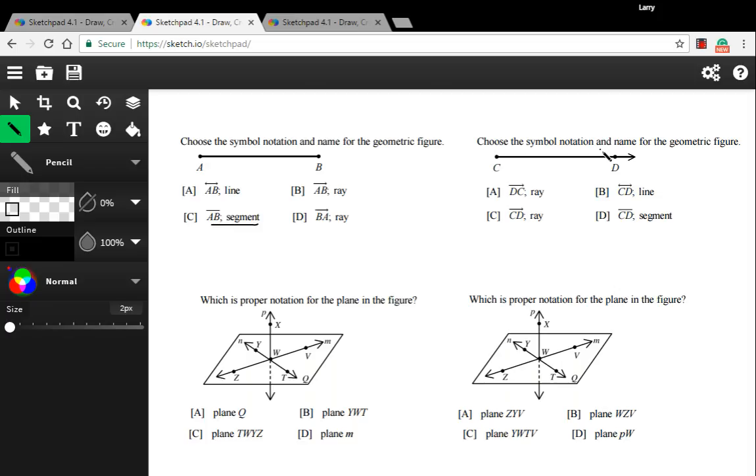This one says choose the symbol notation and name for the geometric figure. And here we have a ray. The ray starts at C and goes on through D and off forever in one direction. So it's not a line or a segment, it is a ray. How do we choose between ray DC or ray CD? It does matter. It's really important that this first point, the endpoint here, comes first, and then the arrow goes off in that direction. So in this case, C is the correct answer and A is incorrect.